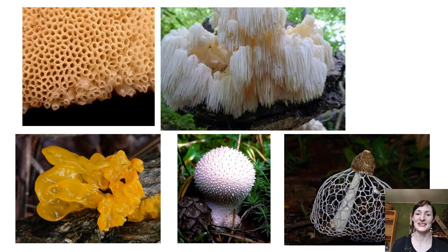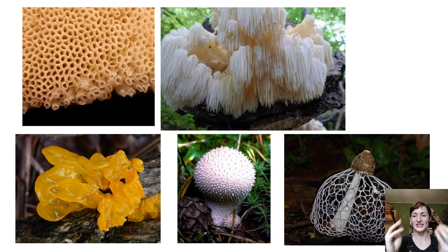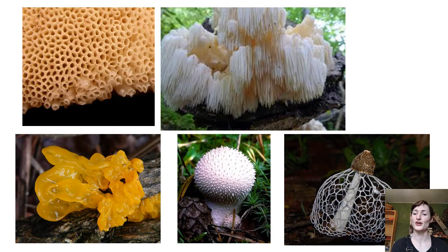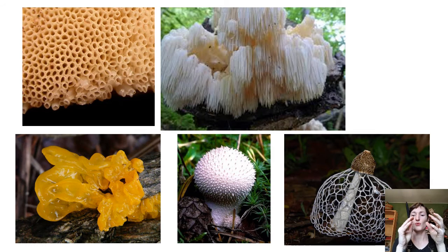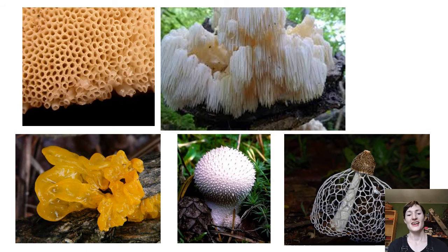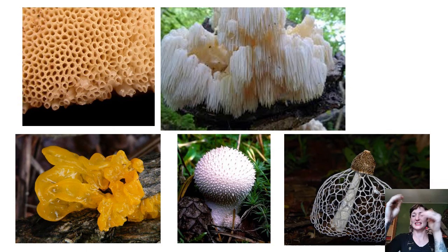The spore-producing surface doesn't always have to be gills — there's a vast variety. The beefsteak mushroom Fistulina hepatica has tubes, with spores and basidia produced on the inside of each tube. Hericium has long dangling spines, with spores produced on the outside of each spine — almost like an inverted tube. Jelly fungi are tiny orange blobs that become gelatinous when it rains, covered with basidia and spores on the outside. Puffballs jam all spore-producing surface into an enclosed structure — once hit by raindrops or ruptured, spores puff out into the air.